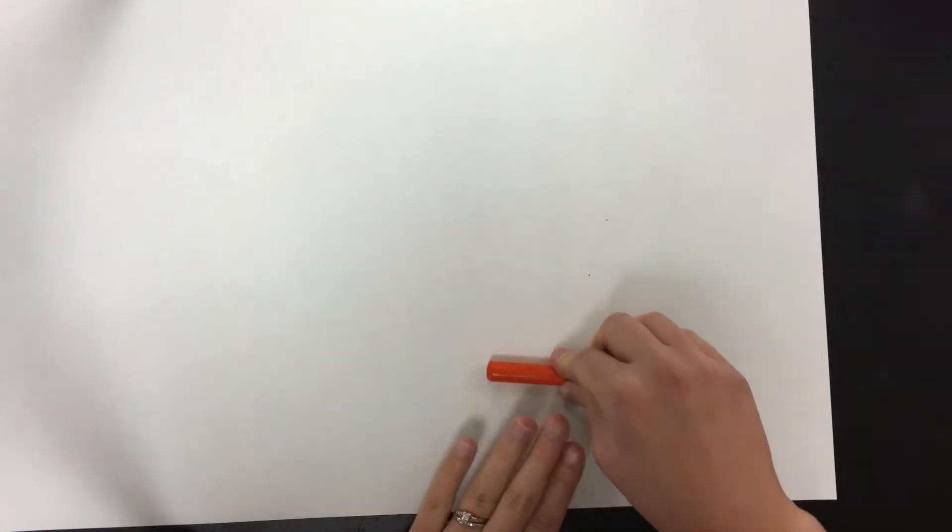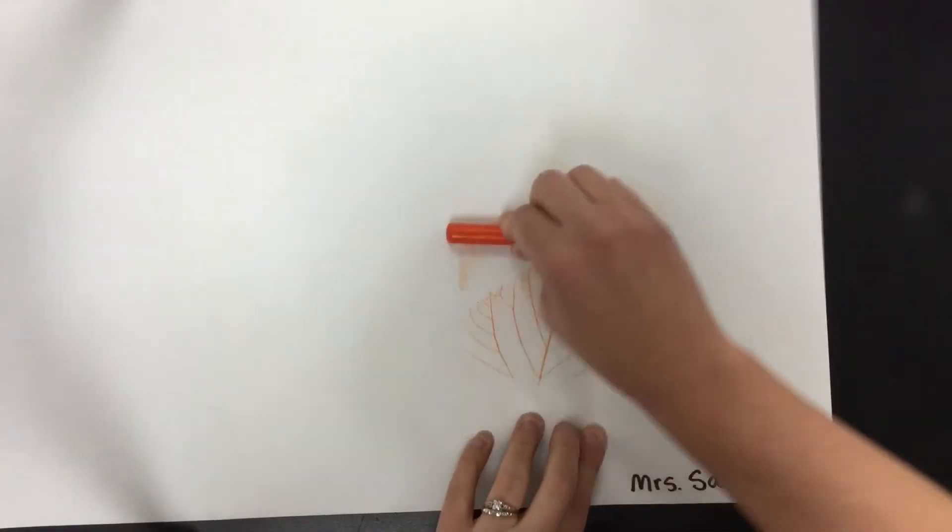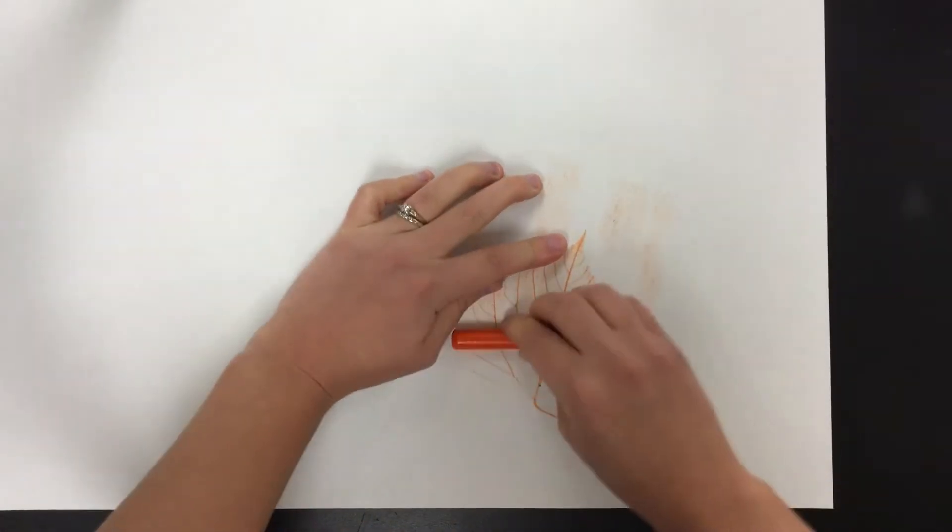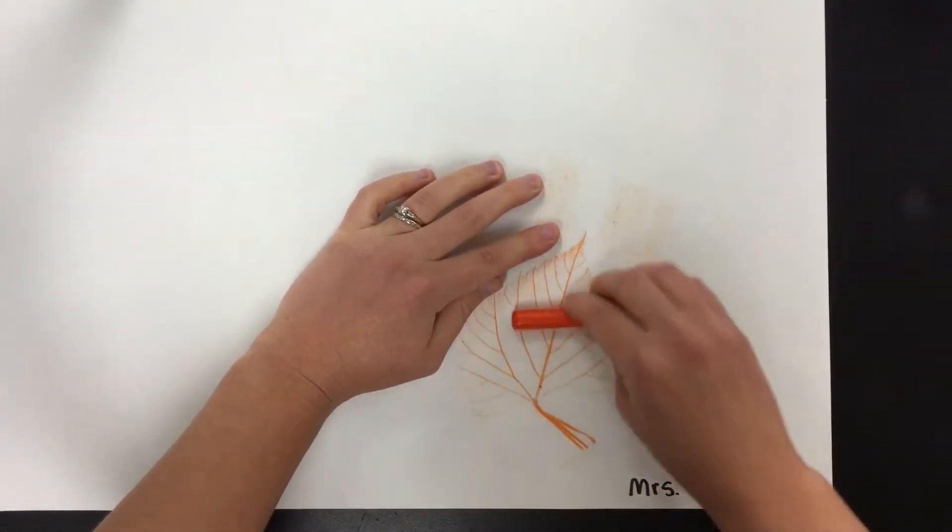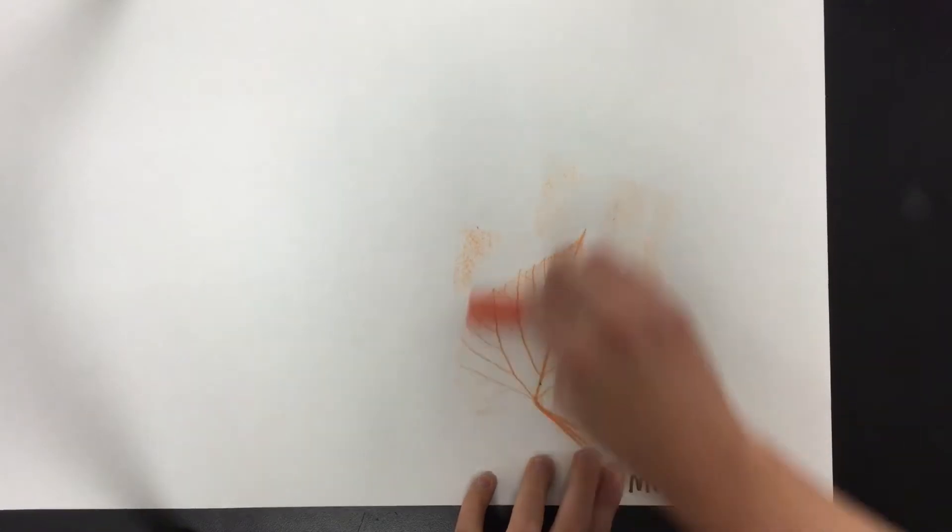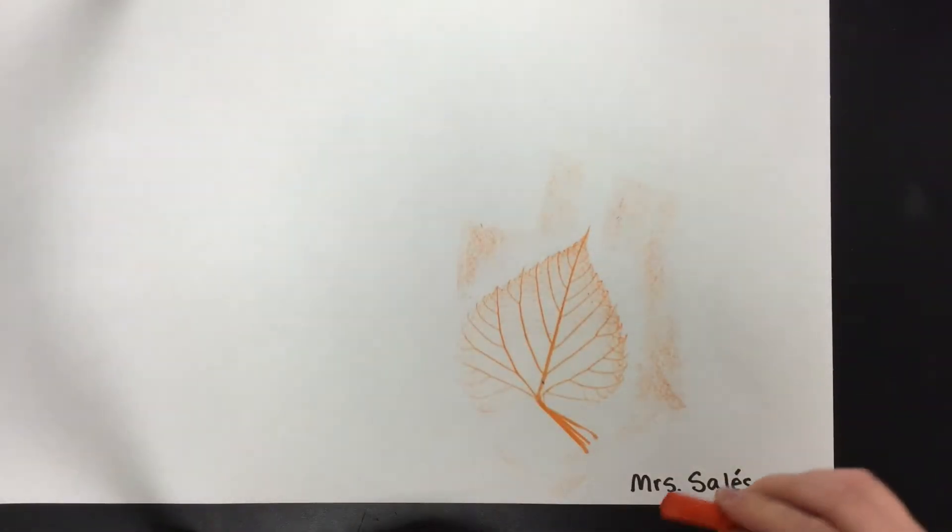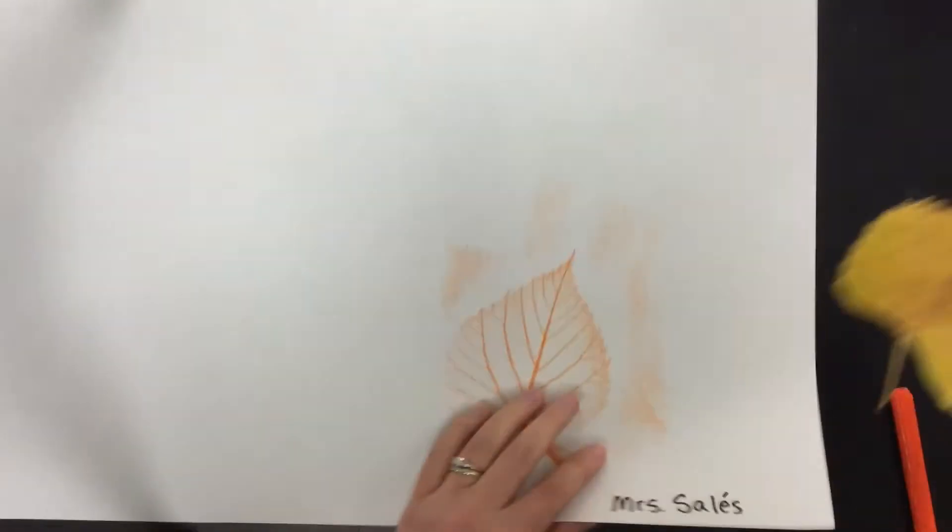We're going to hold down paper with our helper hand and then we're going to push the crayon over where the leaf is. Push and pull. Use your muscles for this so the color really shows up. Push and pull the crayon sideways. This is why we don't have paper on these crayons because otherwise it wouldn't color on the side.